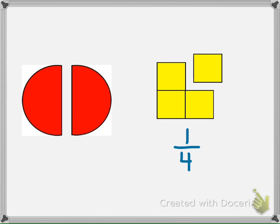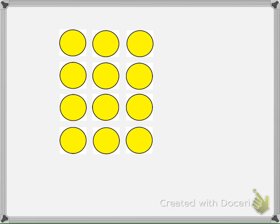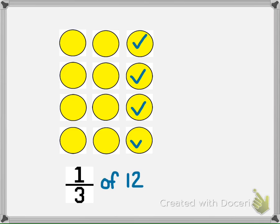Understanding fractional parts of a set or a group of objects takes a little bit more math to understand. Suppose we had 12 buttons. If we wanted to know the value that one-third of these 12 buttons represented, we would count and mark every third button, because one-third means one out of three. Finally, we could count the total number of buttons that were marked and find the value of one-third of the group.